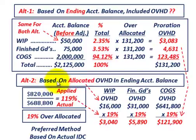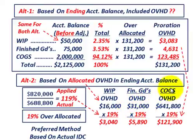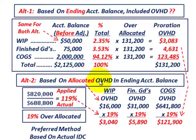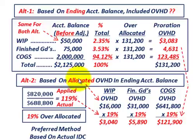Alternative two is based on the allocated overhead that's included in each of those ending balances. For work in process, we know the overhead included is $16,000; for finished goods, $31,000; and for cost of goods sold, $641,800. The ending balance totals — work in process $50,000, finished goods $75,000, cost of goods $2,000,000 — are the same between alternatives one and two. If you don't know how much overhead is included in the accounts, you have to use alternative one, but if you know it, alternative two is the better way to go.